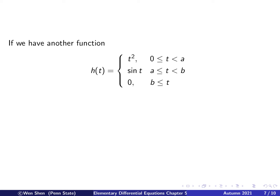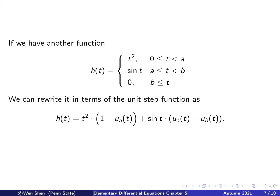We can extend this to a more general situation. Say h(t) equals t-squared on the interval from 0 to a, sin(t) from a to b, and 0 for t greater than b. We write t-squared multiplied by 1 minus u_a(t), which picks up the first interval. Then sin(t) multiplied by the rectangular pulse u_a(t) minus u_b(t), which picks up the second interval. The last piece is zero, so we don't need to add anything.